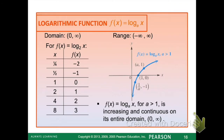Let's look at our parent function for a log function f of x equals log base a of x. We see that our domain is from 0 to infinity, and our range is from negative infinity to infinity. We have a table of values, but there are really three main points to focus on: the point 1 over a comma negative 1, 1 comma 0, and a comma 1. Make sure you have those written down in your notes.